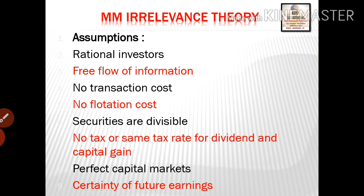The assumptions of M.M. theory are: first, rational investors — investors are rational and there is free flow of information with investment opportunities available. Second, there is no transaction cost. Third, there is no flotation cost on security issues. Fourth, securities are divisible into small denominations. Fifth, there is no tax differential — the same tax rate applies to dividend income and capital gains. Sixth, there is certainty of future earnings.